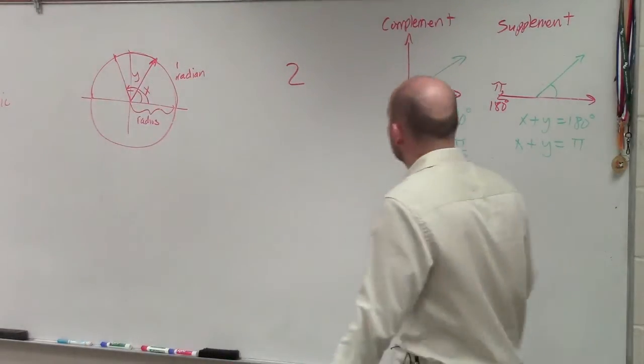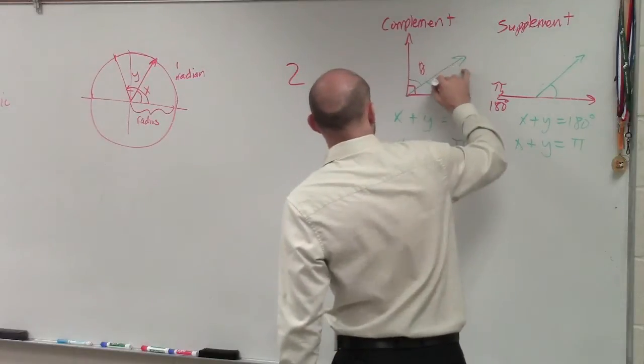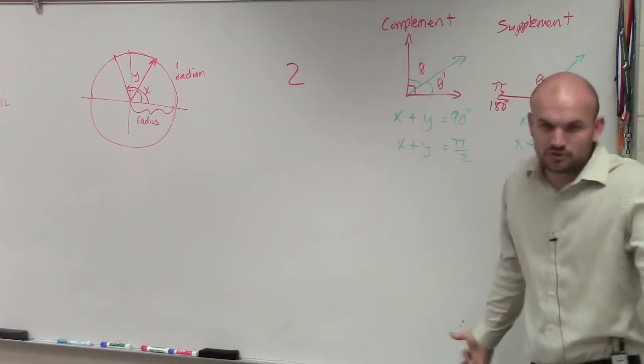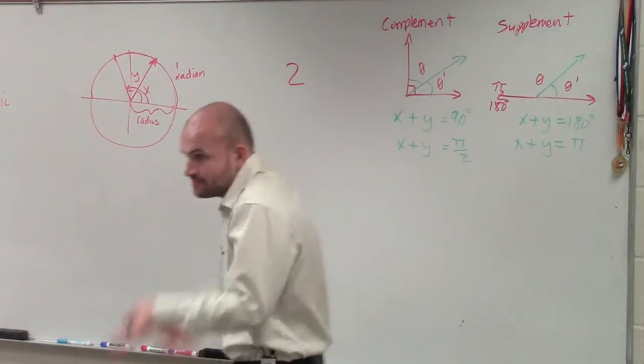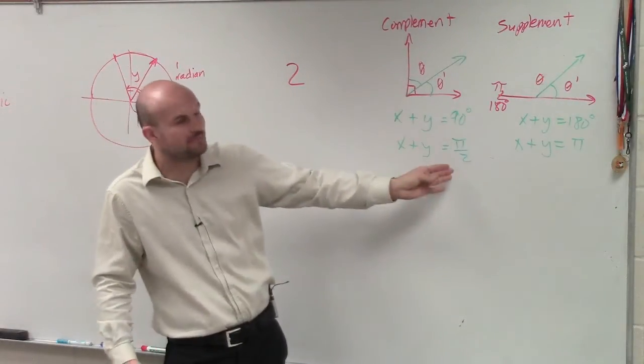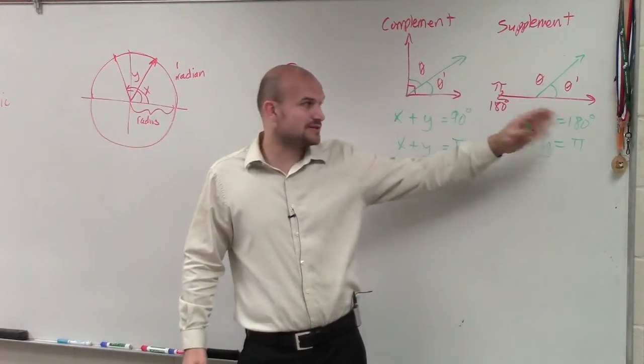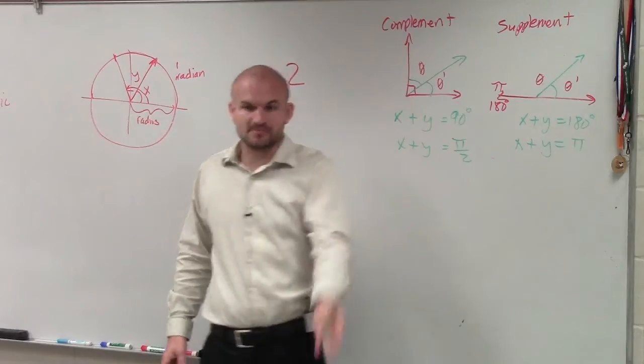Now, the issue is, remember the complement. Let's say we have two angles, theta and theta prime. Those just represent our angles. We don't know the measure of them. But if we have two angles that add up to give you 90 degrees or pi halves in radian form, those are complements of each other. If we have two angles that add up to 180 or pi, those are supplements of each other.